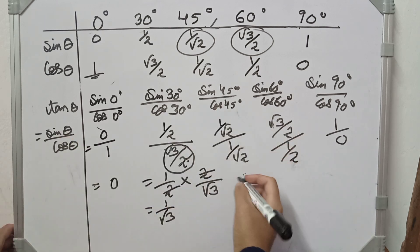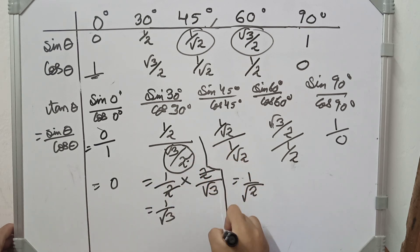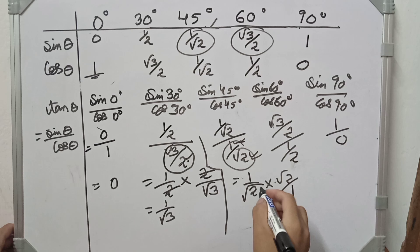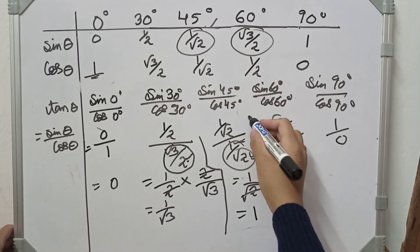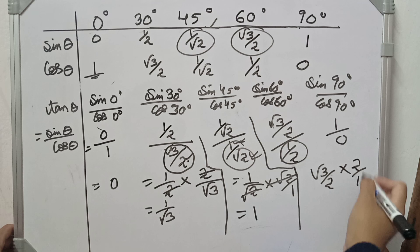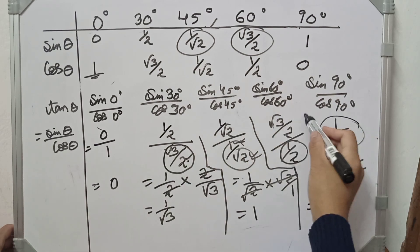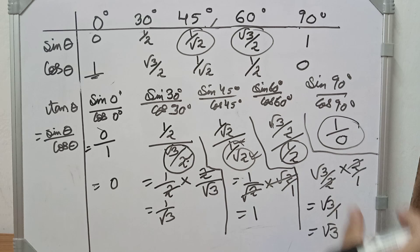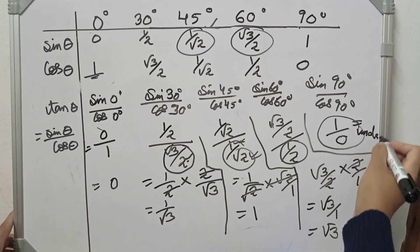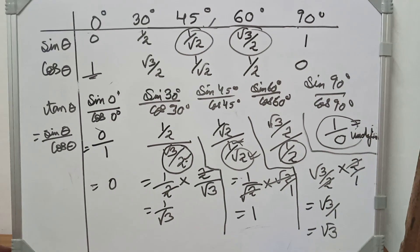For tan values: 1 divided by √2 equals 1 by √2. Multiply under root 2 by 1 to get √2. For √3 by 2 divided by 2 by 1 equals √3 by 1, which is √3. Something divided by zero is undefined — not defined.